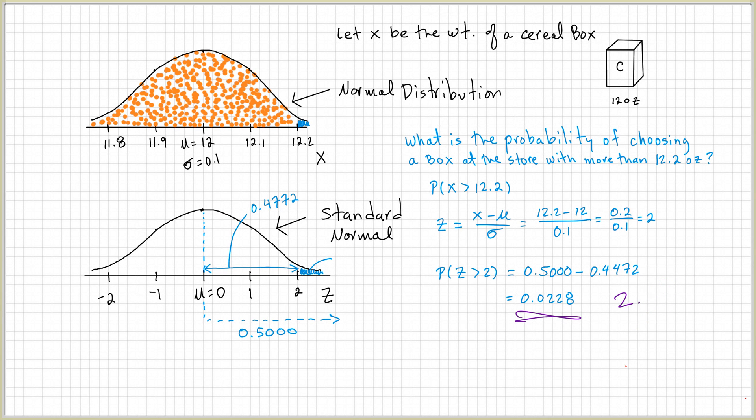Very small. So, this value here corresponds to this value, the answer for this. So, you have 0.0228 for the area under the curve for the standard normal. It's the same thing as the area under the curve for the normal distribution.